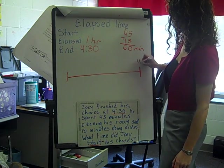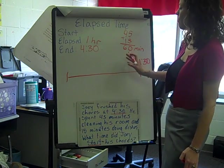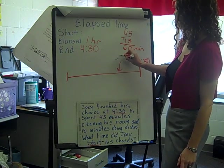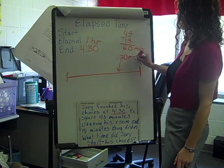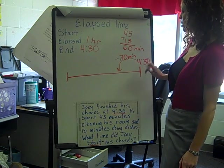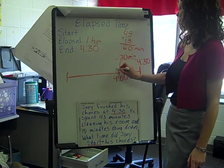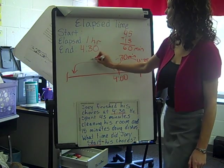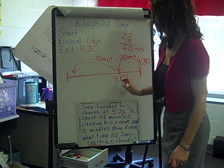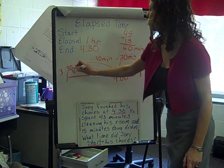The end time is 4:30. You can break it into half hours — go from 4:30 minus 30 minutes, which brings you to 4 o'clock. Then I still have 30 minutes left to take off. 4 o'clock minus 30 minutes would be 3:30 for my start time.